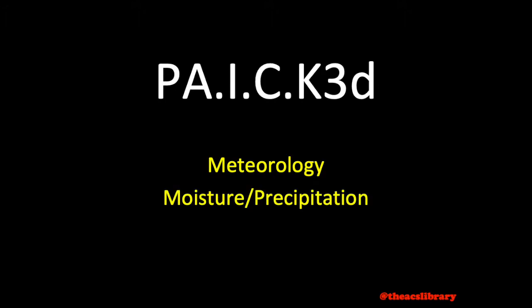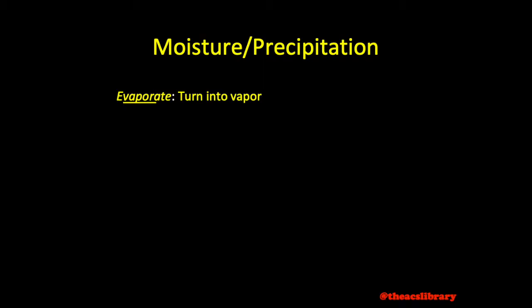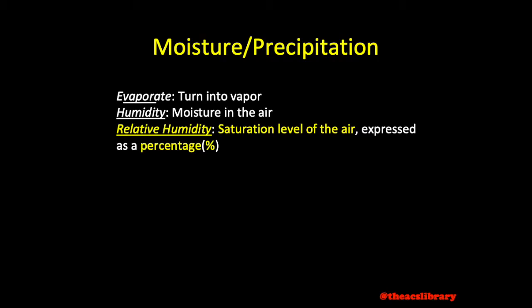Water, whether gaseous, liquid, or frozen can cause great hazards in aviation. As water evaporates or turns to vapor it forms what is commonly known as humidity or moisture in the air. The term relative humidity refers to the percentage of water vapor currently in the air, with 100% meaning that the air is totally saturated with moisture. To calculate the relative humidity, simply divide the amount of water vapor present in the atmosphere by the amount of water vapor possible. This is something that the weather station has already done for us.